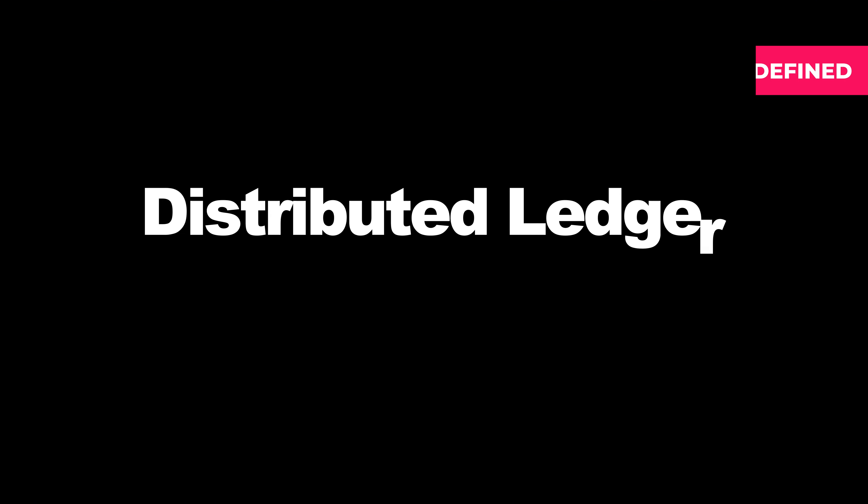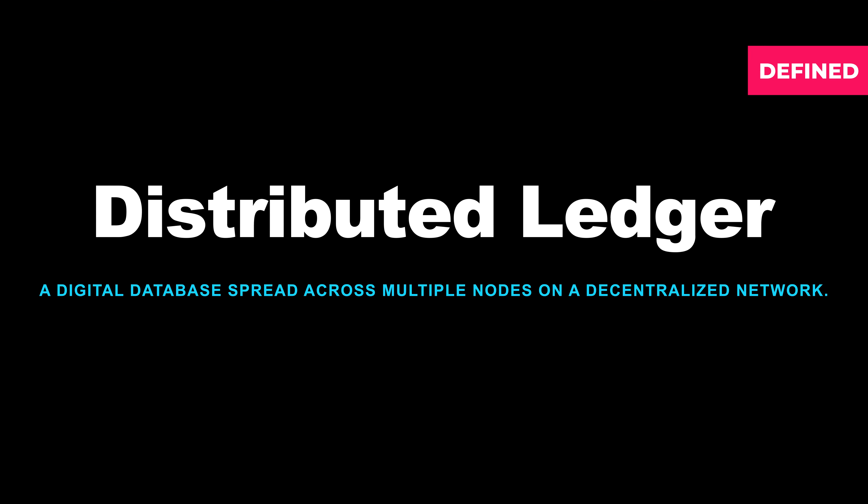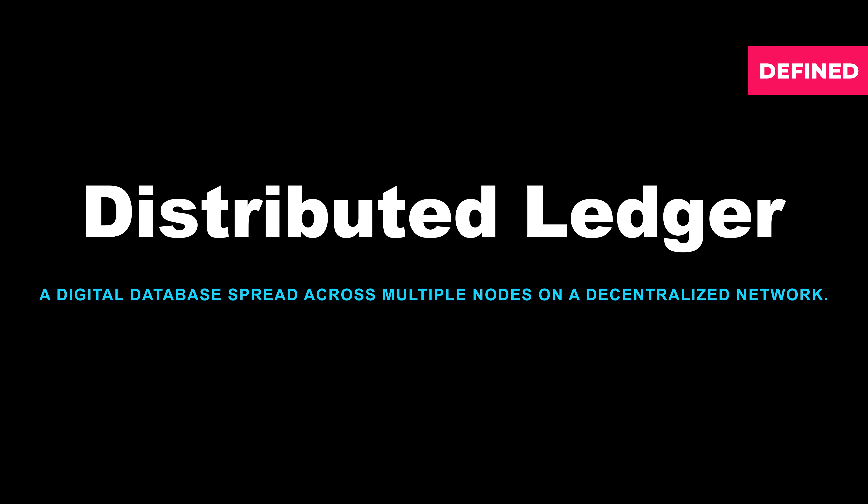Defined simply, a distributed ledger is essentially a digital database that is spread across multiple nodes on a decentralized network in order to protect the data within it from manipulation. It's also worth noting that the terms distributed ledger and blockchain technology are often used interchangeably.